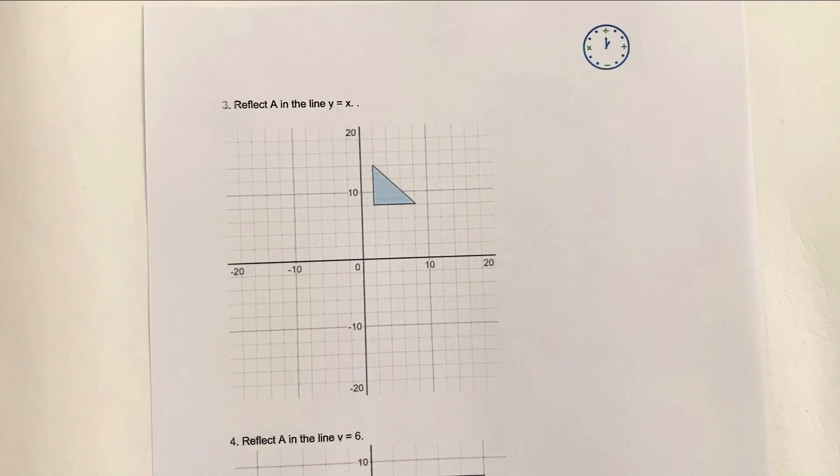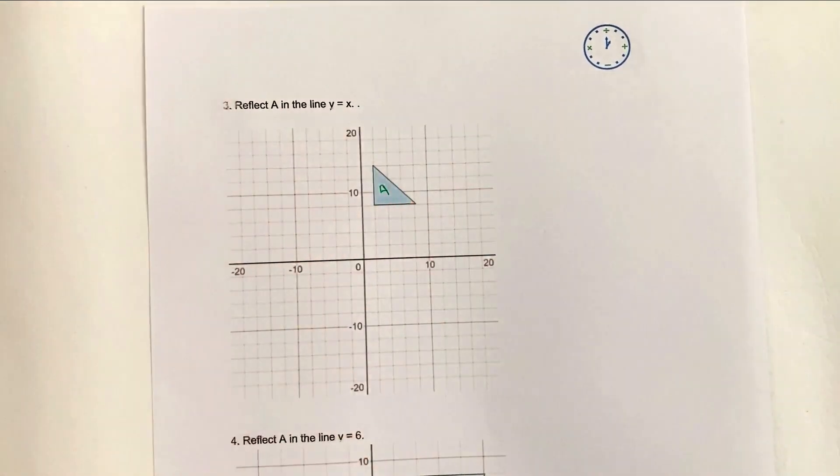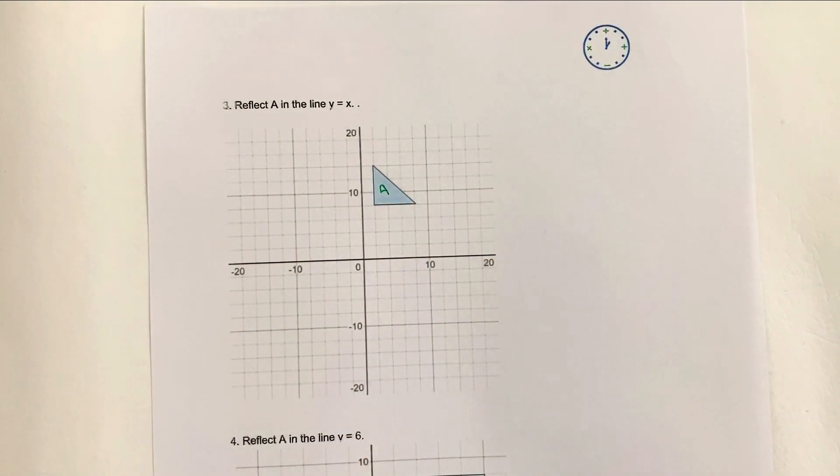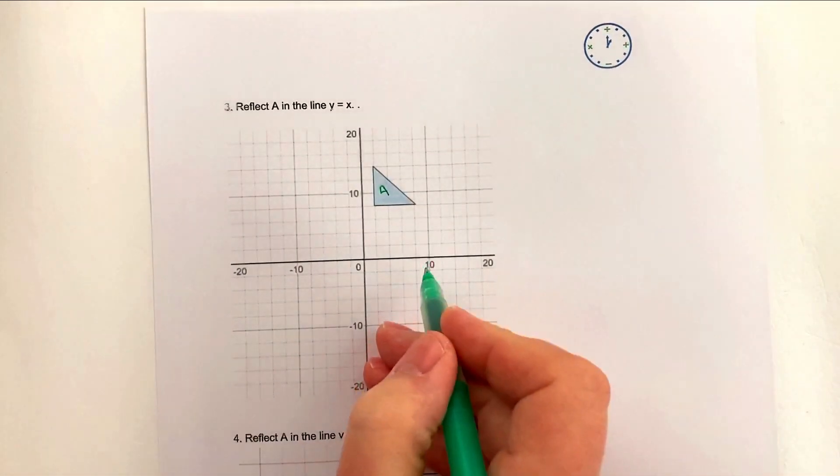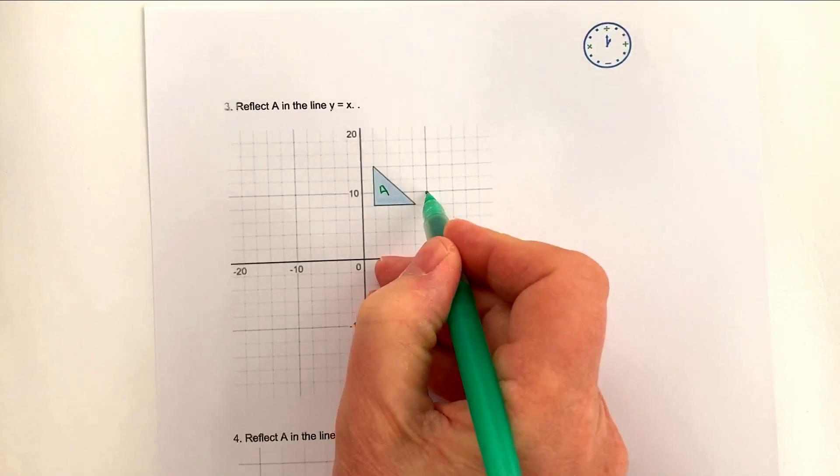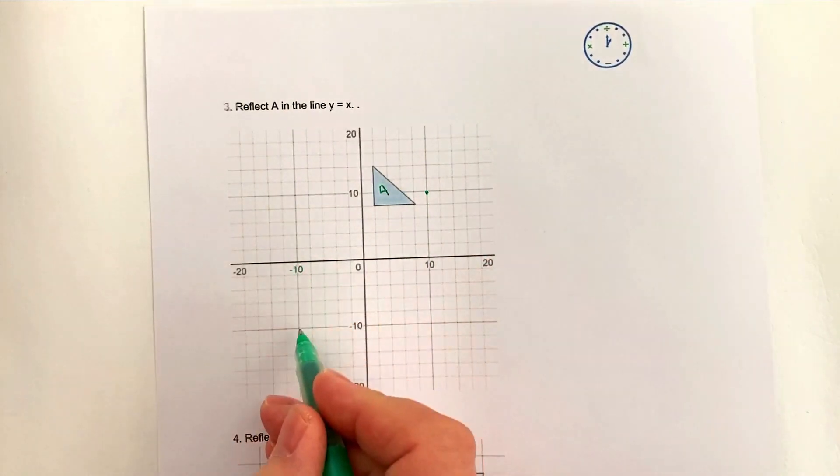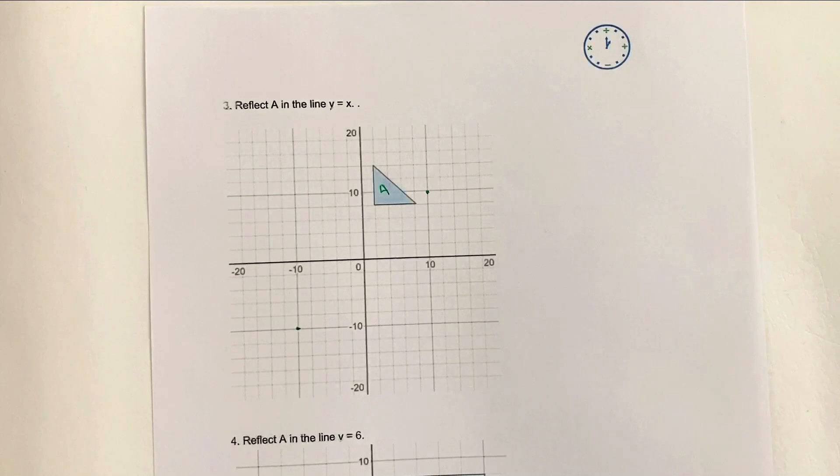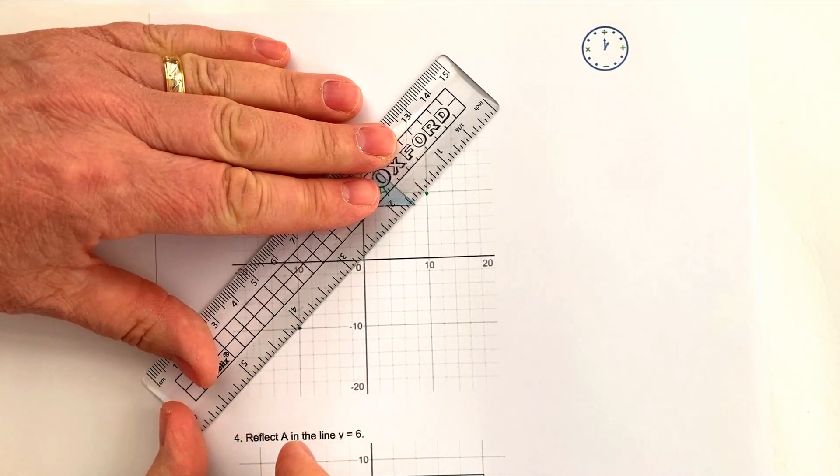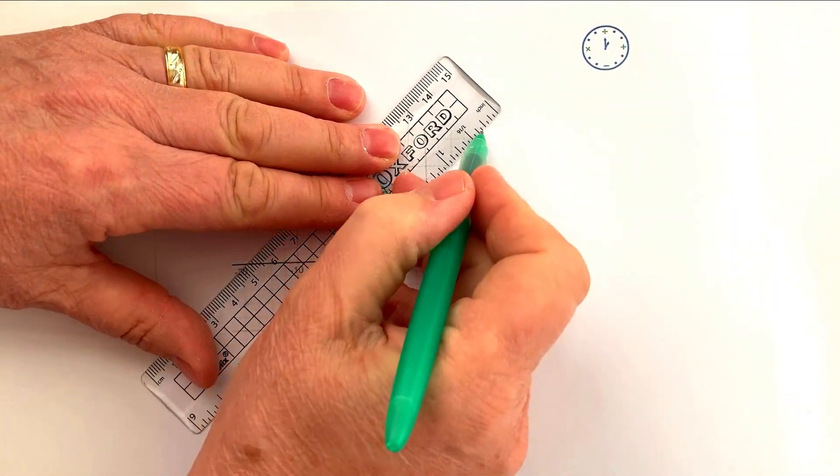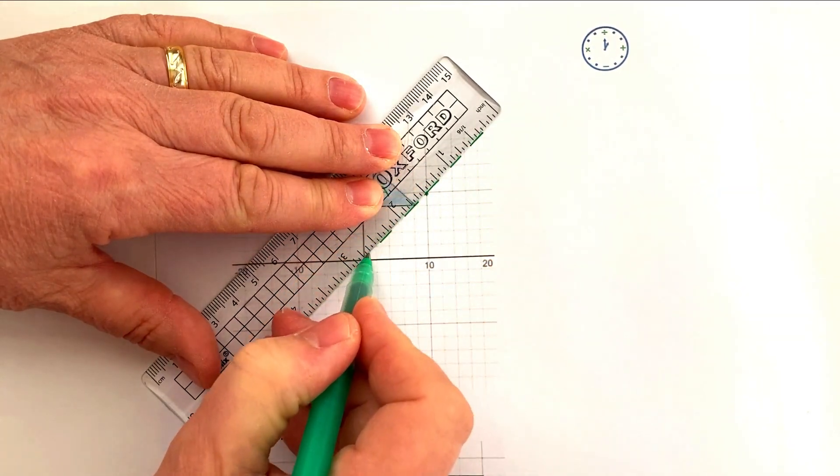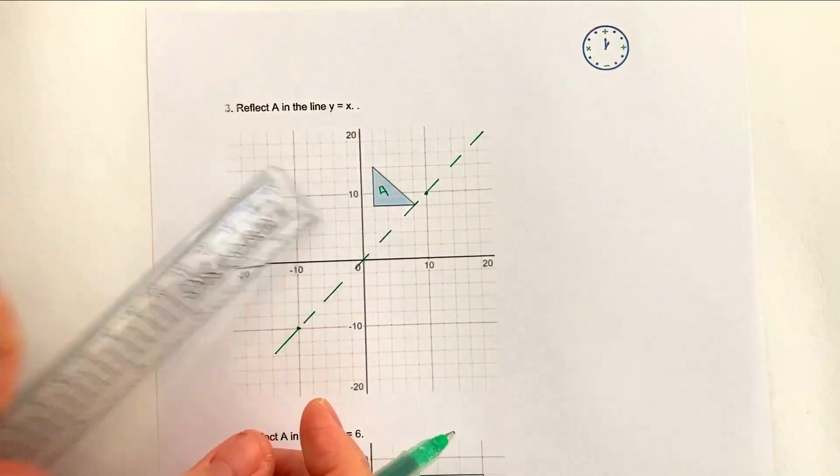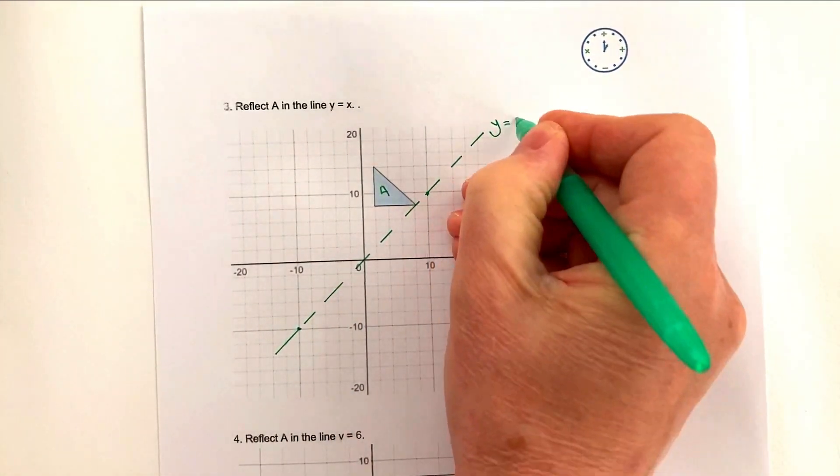On to question number three. It says reflect A in the line y equals x. The line y equals x is where the coordinates of x and the coordinates of y are exactly the same. I can just do a few dots: x is 10 so y must be 10, or x is minus 10 and y must be minus 10 as well. What we've actually got is a line which looks like this. I'm just going to draw this line in. This is the line y equals x.